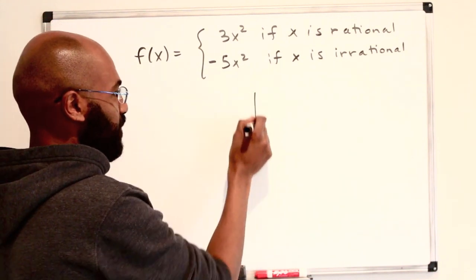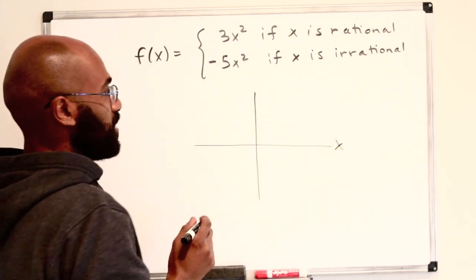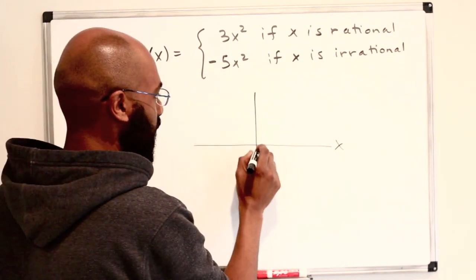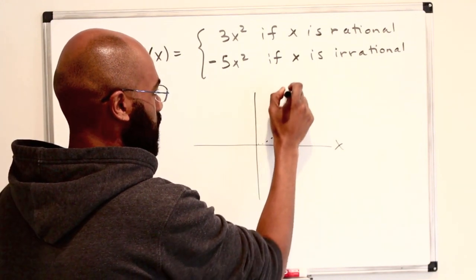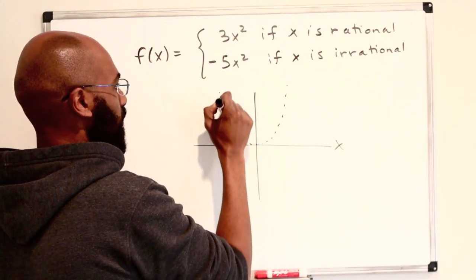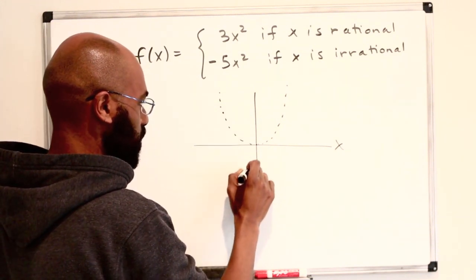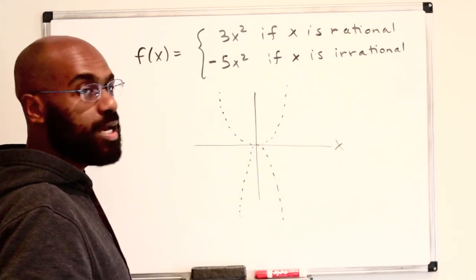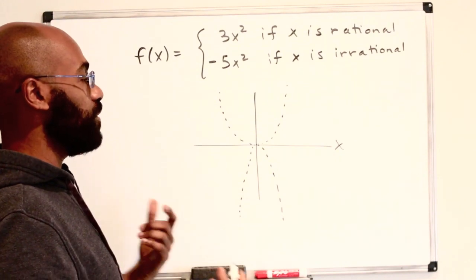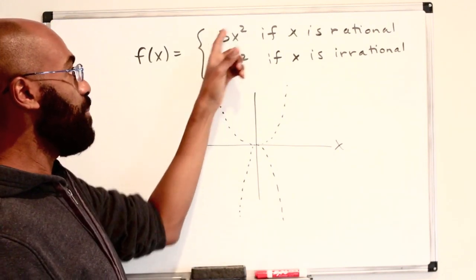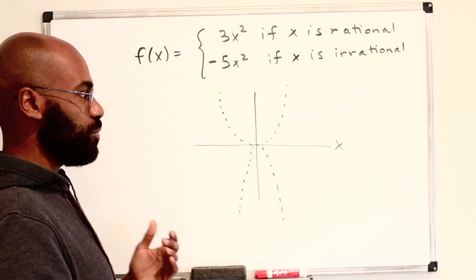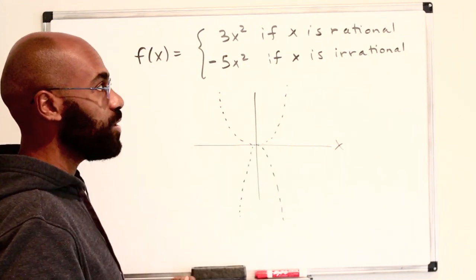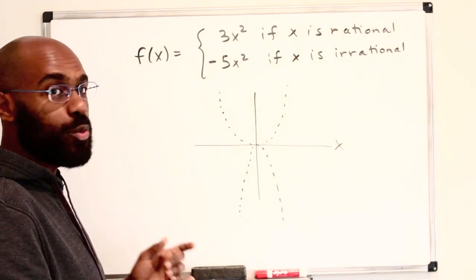To get a sense of what this graph might look like, it's kind of like the function is bouncing between two parabolas. When x is rational, we get 3x squared, so we get points that look like this. But when x is irrational, we get negative 5x squared, so we get something like this. This function is constantly bouncing between these two things. Traditional methods for finding the derivative would employ something like a power rule or product rule, but here we're in this interesting situation where the function keeps bouncing between these two parabolas, so we can't really see what's going on with the derivative at zero.